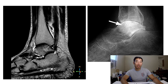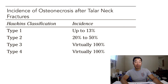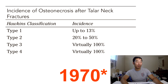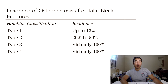The common classification used to describe talar avascular necrosis — at least for the talar neck — is the Hawkins classification, designed around 1940 by Hawkins. It initially included three types. Type one is an avascular fracture site: there is a fracture at the talus but no displacement, and the incidence of avascular necrosis ranges from 0 to about 13 percent. The original Hawkins article reported zero percent, but other articles reported about 10 percent.